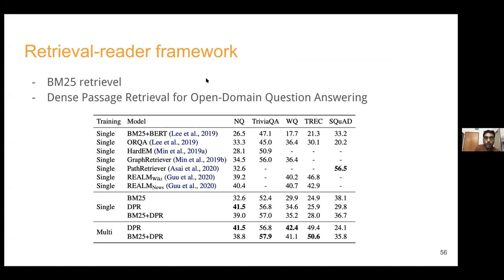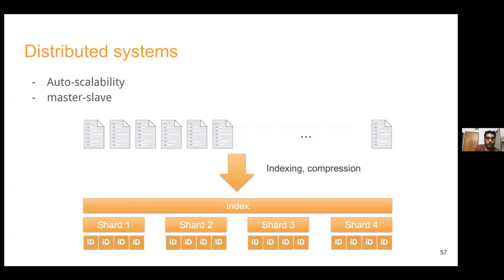The retrieval-reader framework also helps with large-scale problems, though it introduces software engineering complexity by combining two systems. Looking at results: BM25 achieves 32 points and Dense Passage Retrieval achieves 41 on one benchmark table - this is not a marginal improvement, it's actually decent. If you're interested, you should definitely look into the DPR paper.